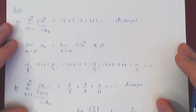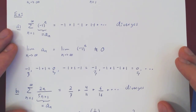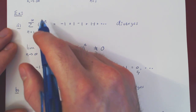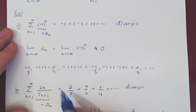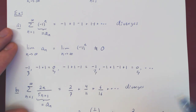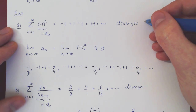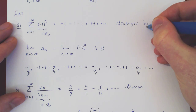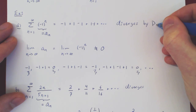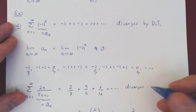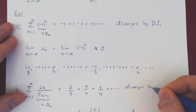Always, when you claim that a series diverges, quote which theorem you are using. So here, both series diverge by the divergence test, also called the divergence theorem.